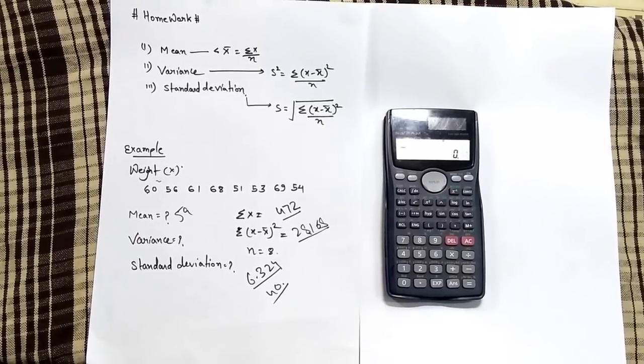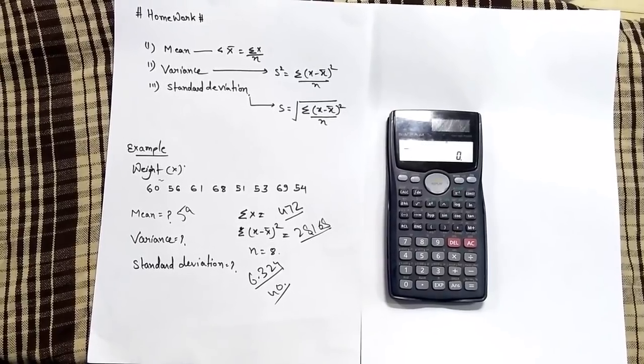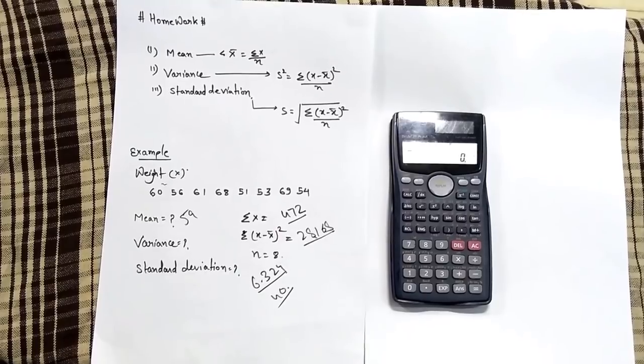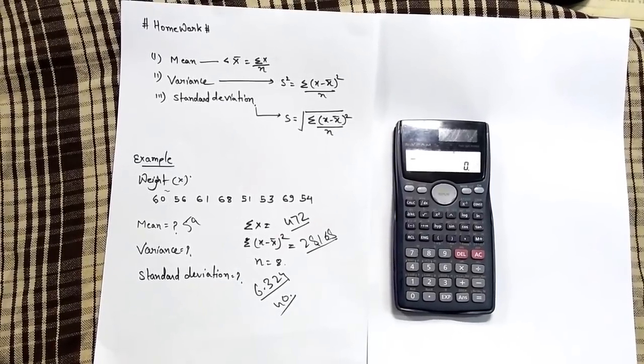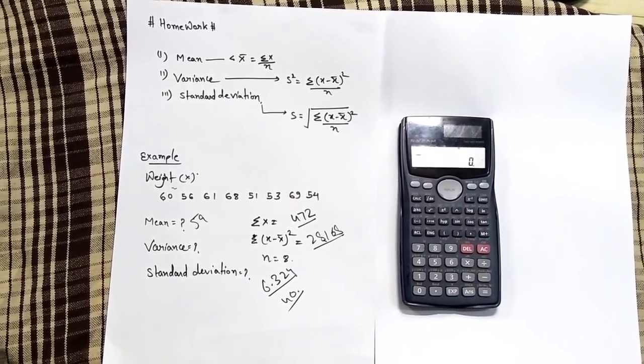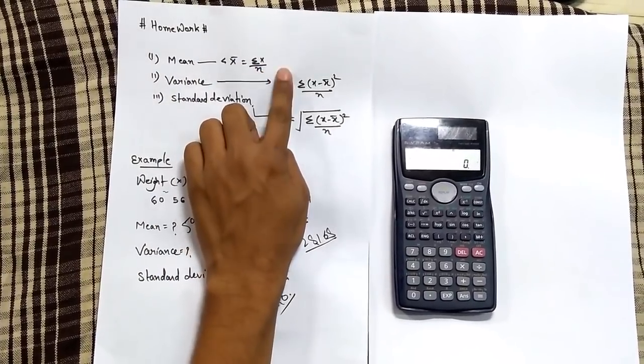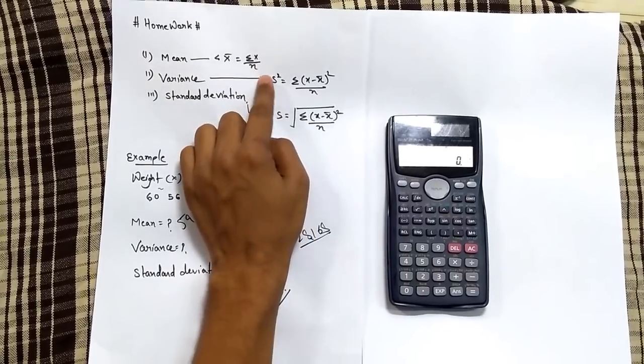Today we are going to calculate mean, variance, and standard deviation using the Casio FX-991 AMS calculator. The basic formula for calculating mean is to sum up all the values divided by the number of values.